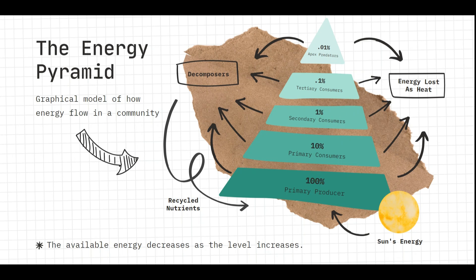This food is eaten by the primary consumers, but only a small percentage of this energy is taken in. The primary consumers are then eaten by the secondary consumers, and the secondary consumers are eaten by the tertiary consumers, and then by the apex predators. It is important to know that energy is lost as it is transferred from one trophic level to another, so the available energy decreases as the level increases.